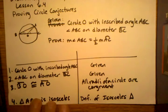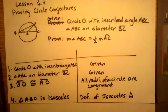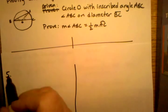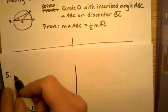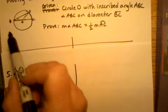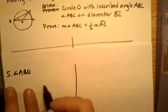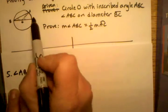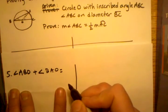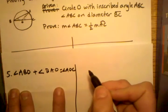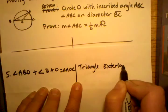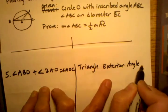So I'm going to go with that and see where it leads me. I'm going to use the triangle exterior angle conjecture and say that angle ABO plus angle BAO is equivalent to angle AOC, and I know that because of the triangle exterior angle conjecture.